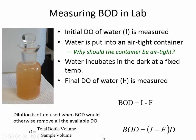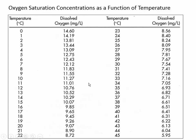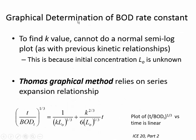DO means dissolved oxygen — the concentration of dissolved oxygen. Here's a figure showing the concentration of dissolved oxygen as a function of temperature. Warm water can't hold as much dissolved oxygen as cold water. That's why salmon and trout require cold water — they use a lot of dissolved oxygen. Some fish can live in warm water because they don't use as much dissolved oxygen.